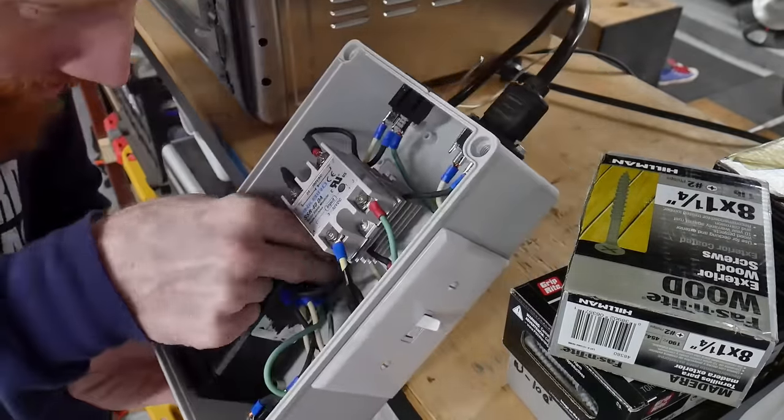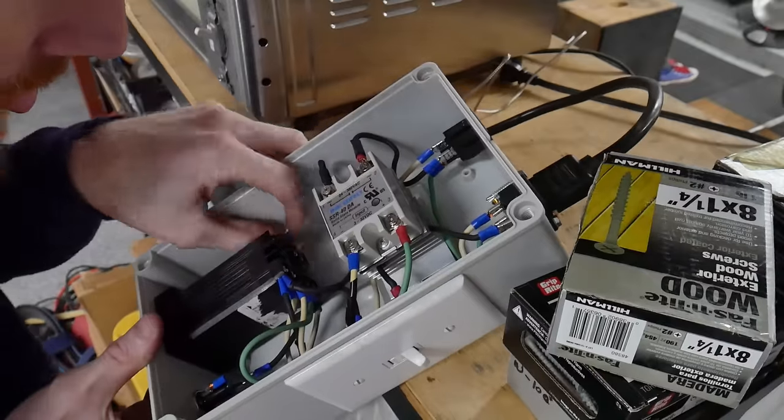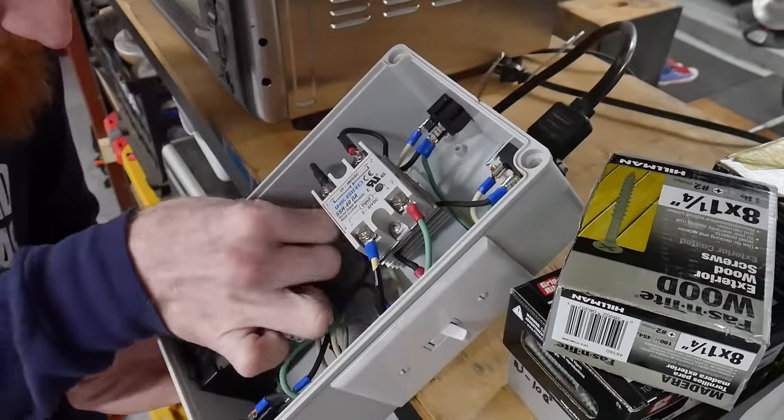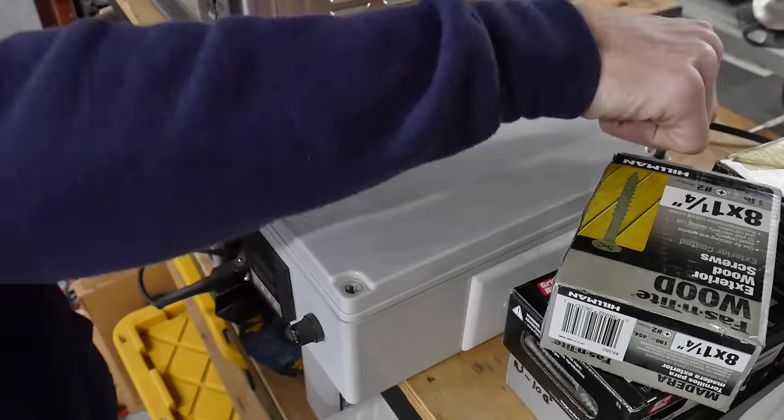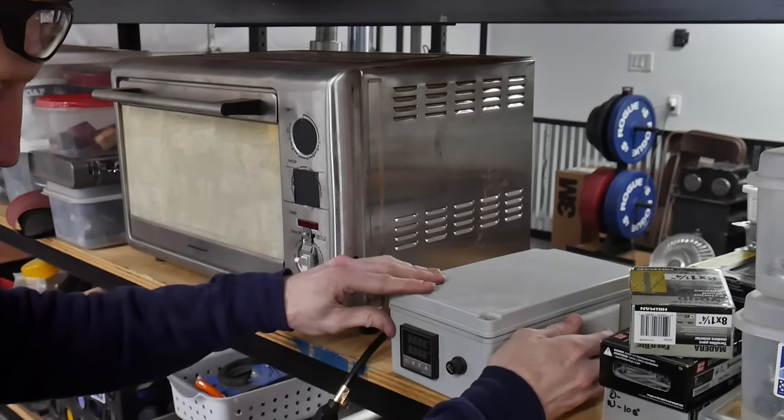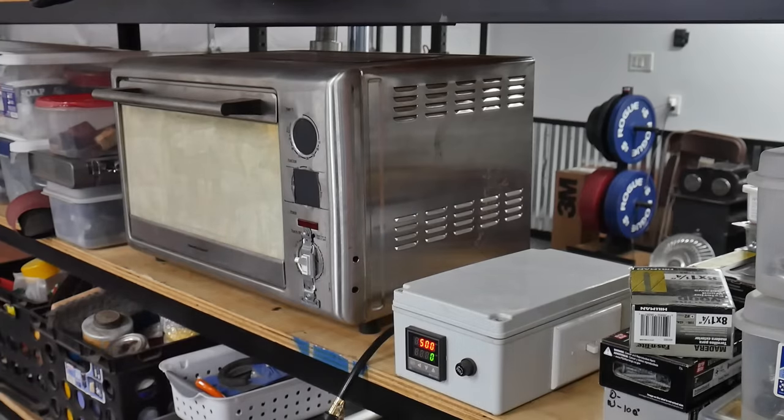The next operation is to temper the blade. What you see me doing here is reconnecting the thermocouple wires to my PID control box that runs the tempering oven. This box rations the power to the toaster oven elements in order to hold a constant, fairly precise temperature based off the readings of the thermocouple.